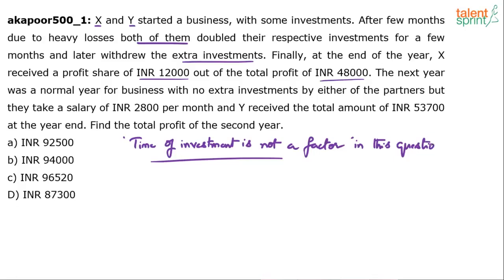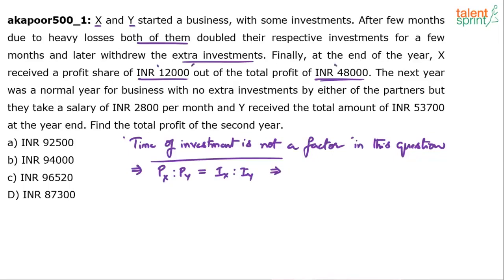Since the time of investment is not a factor, it's not going to impact the answer. This means the profit ratio — profit of X to profit of Y — is purely based on investment of X to investment of Y. Looking at Year 1: X received ₹12,000 out of a total profit of ₹48,000, which means Y received ₹36,000.